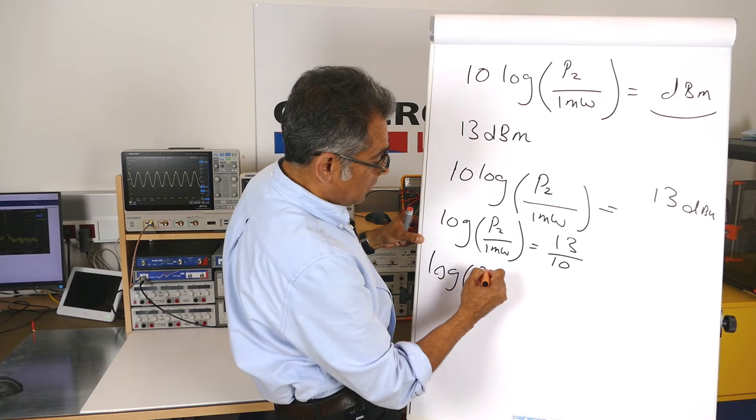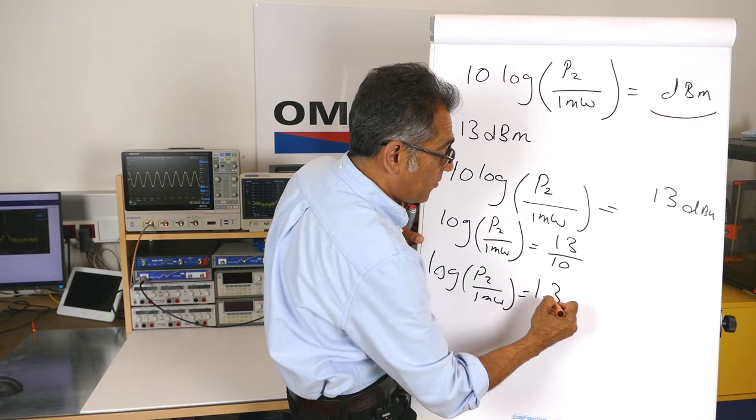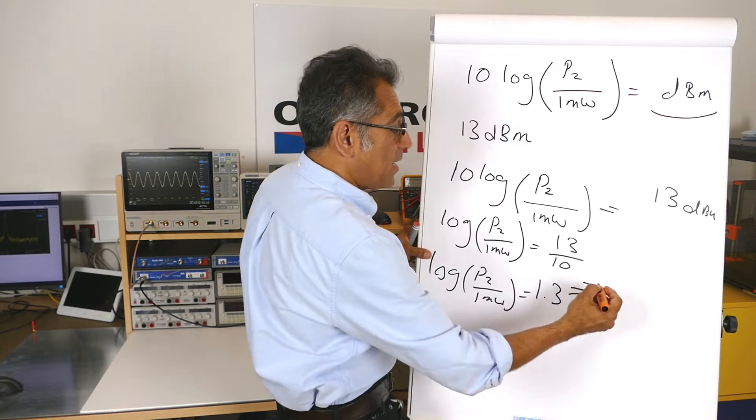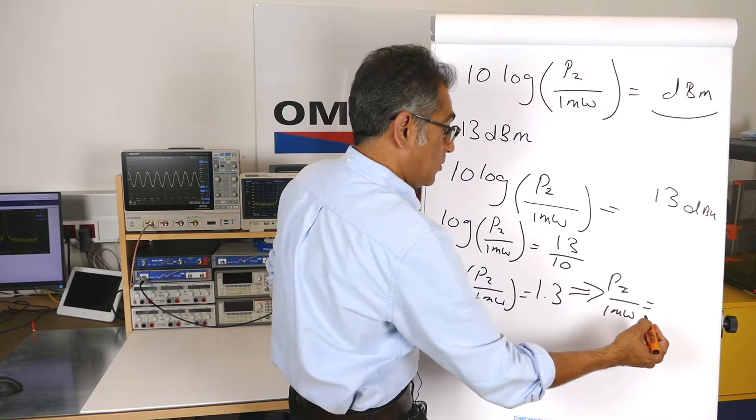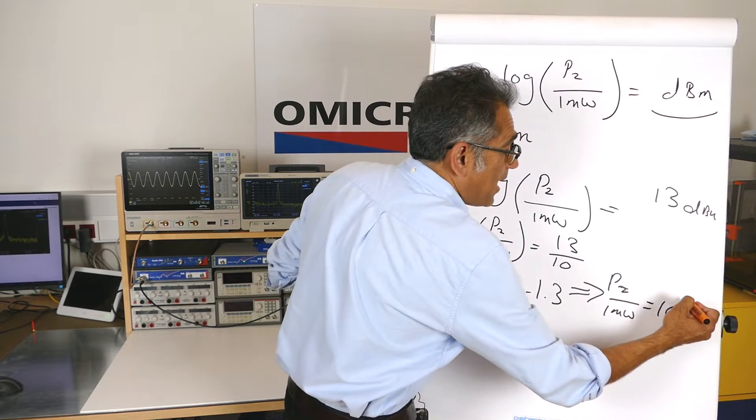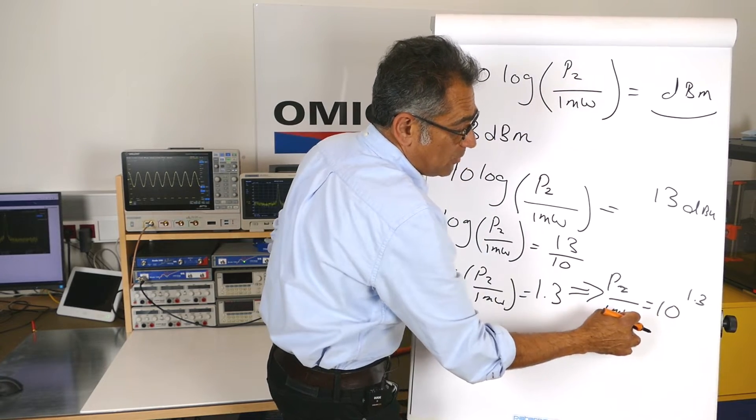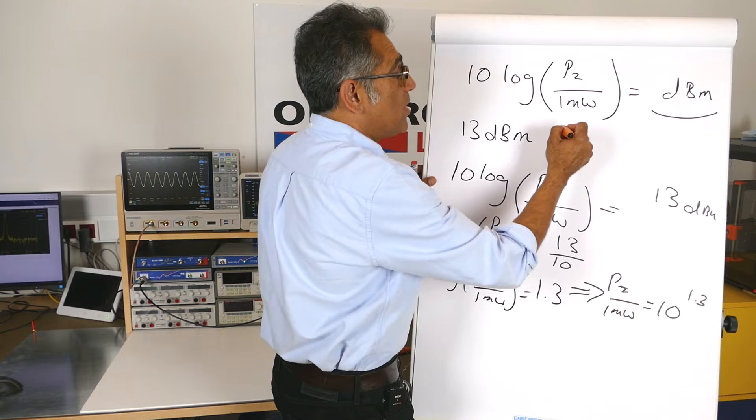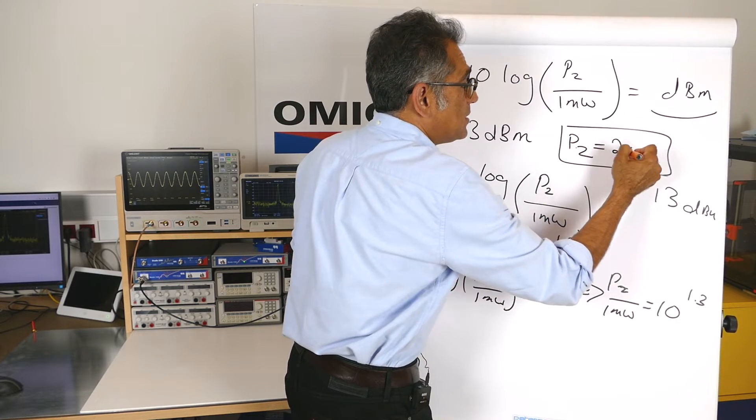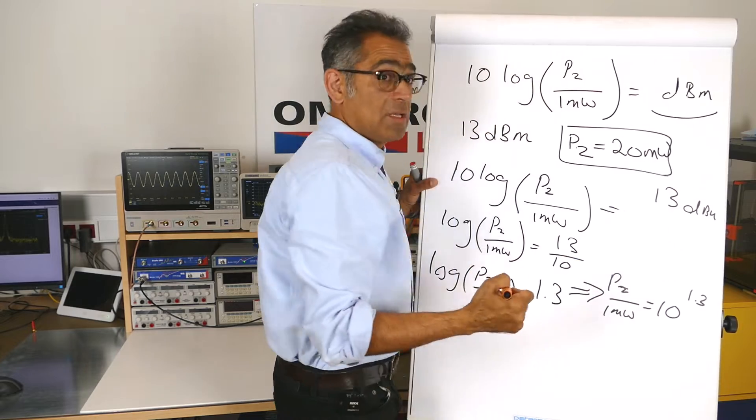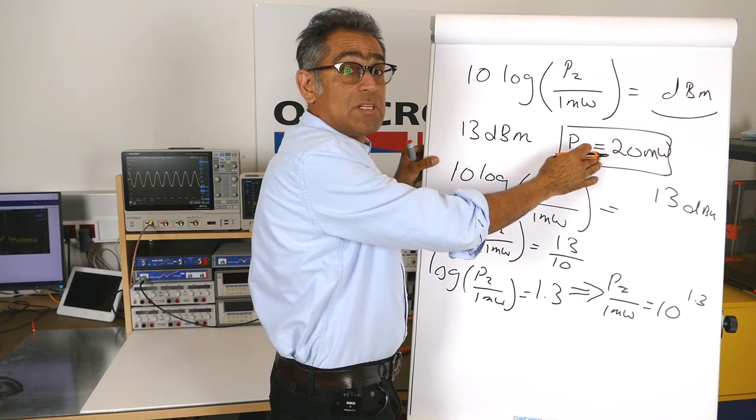P2 over 1 mW equals to 10 to the power of 1.3. And if you calculate this multiplied by 1 mW, you end up with a power of P2 equals to 20 mW.